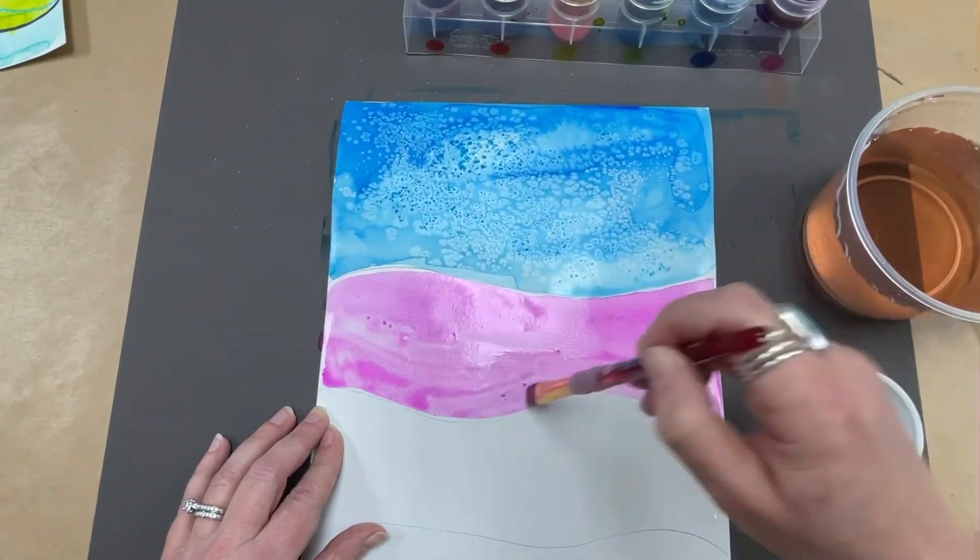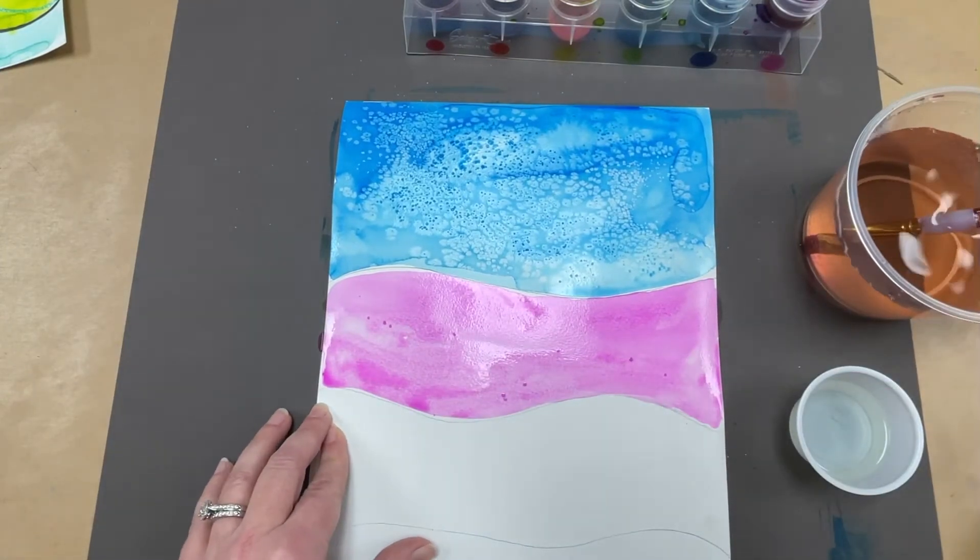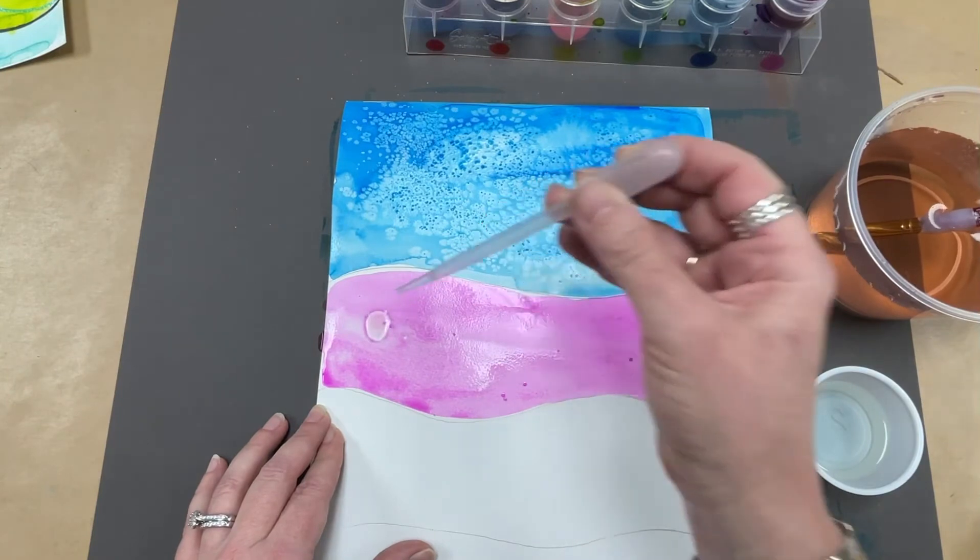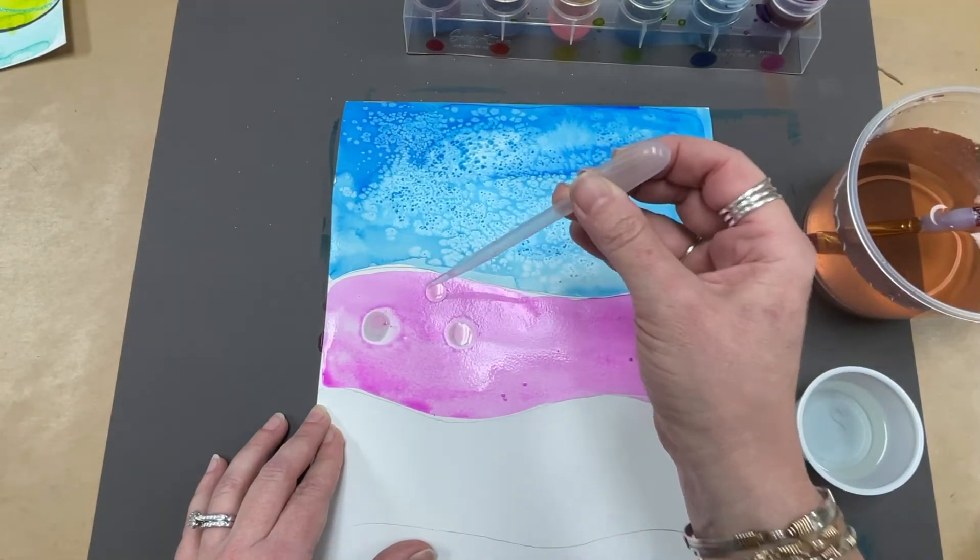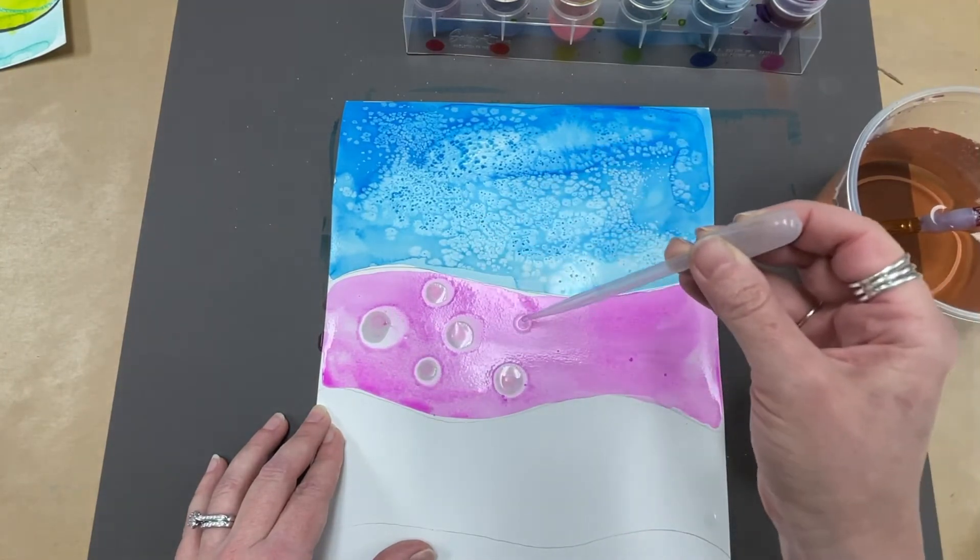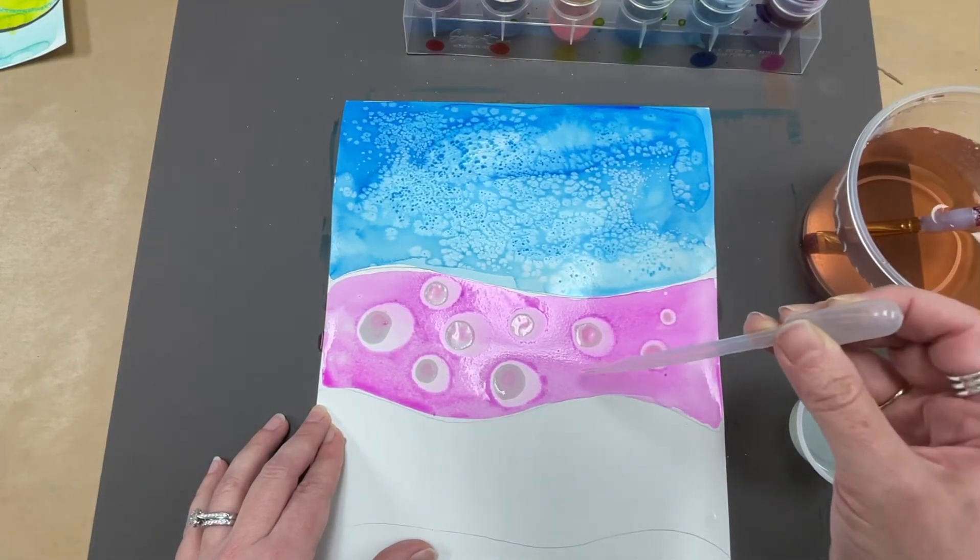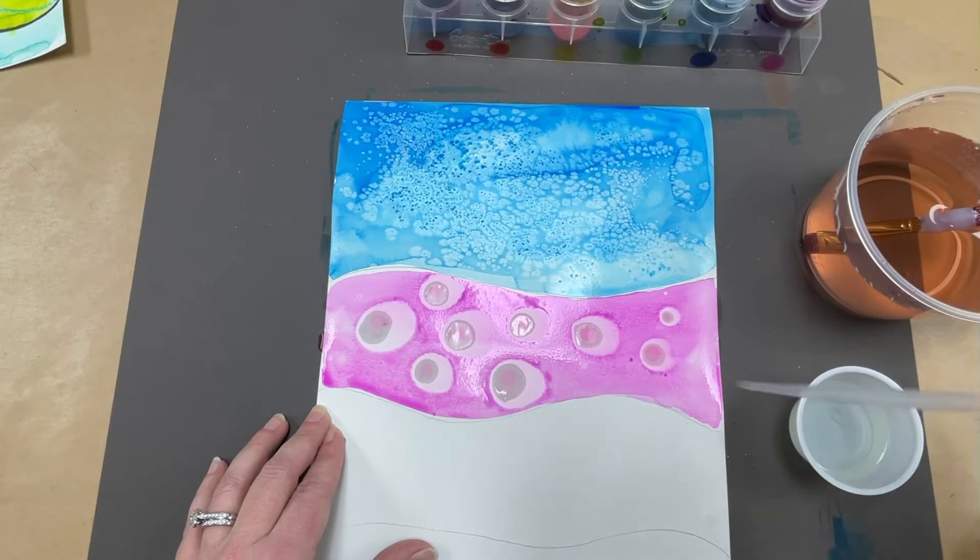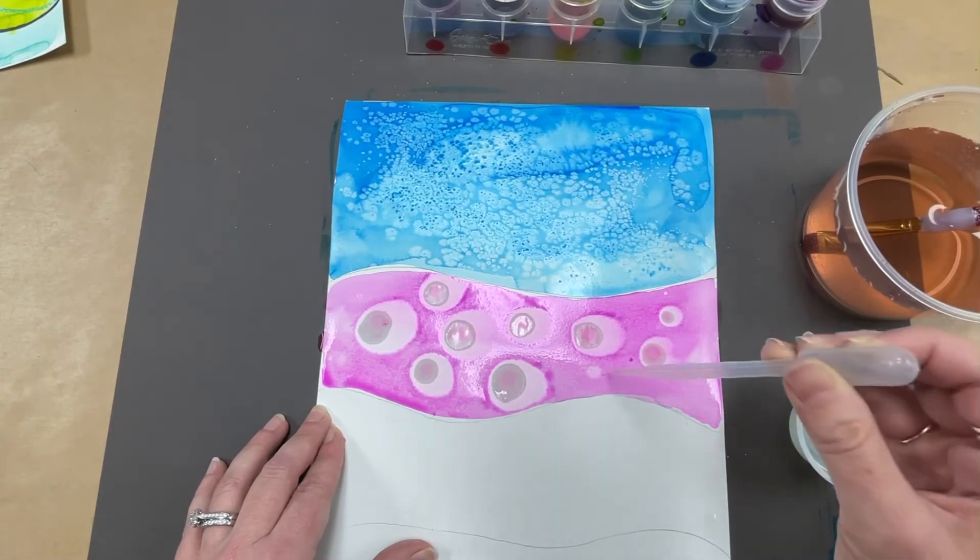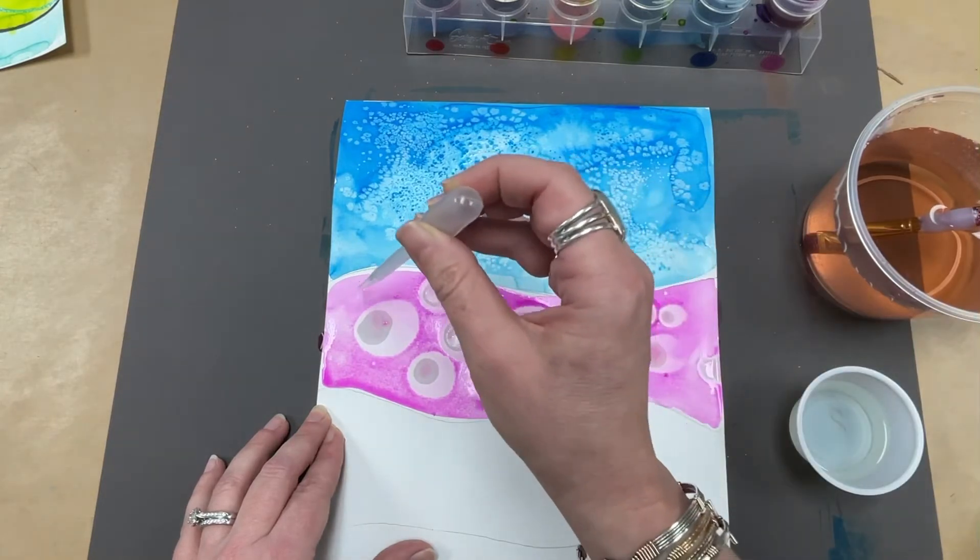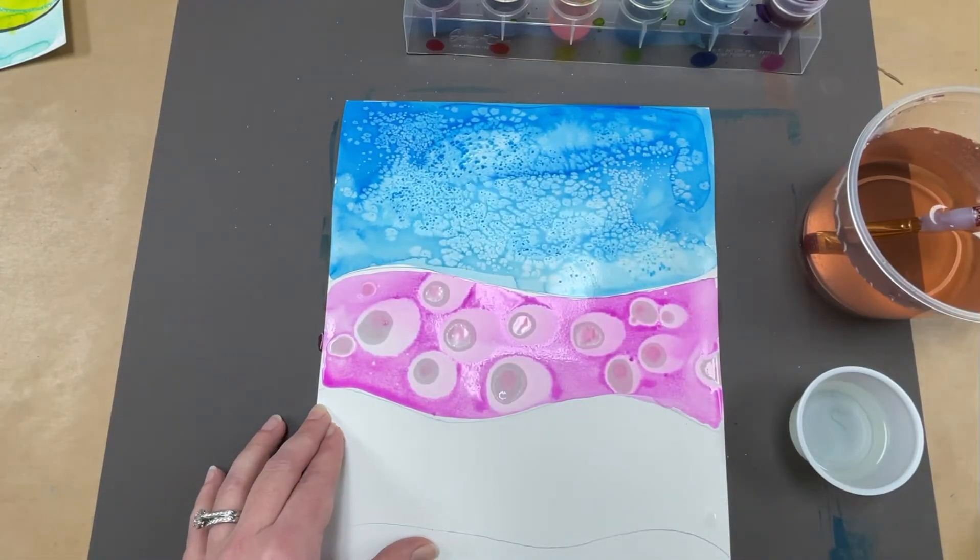So paint it on there really good. And then you're going to take your pipette and get a little alcohol in it. And you're just going to drop it on there and it creates a really neat texture. Look at that. It looks like little bubbles almost. The watercolor tries to run away from the rubbing alcohol. And I love this one. It's probably my favorite one. Isn't that nice?